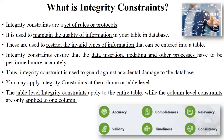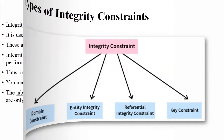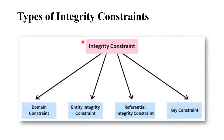So let's see the types of integrity constraints. There are a total of four types: first, domain constraints; second, entity integrity; third, referential integrity; and fourth, key constraints. Let's see all these types of constraints with examples.